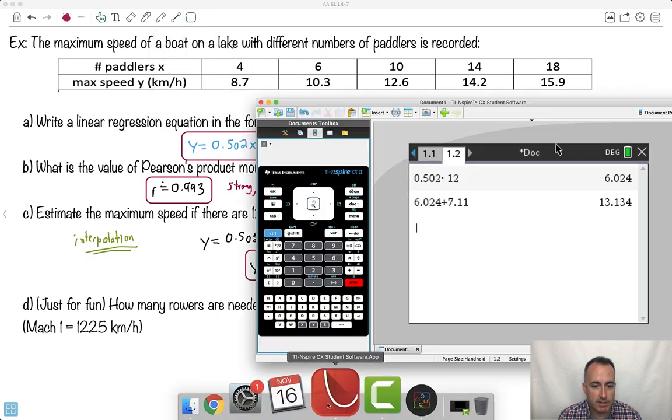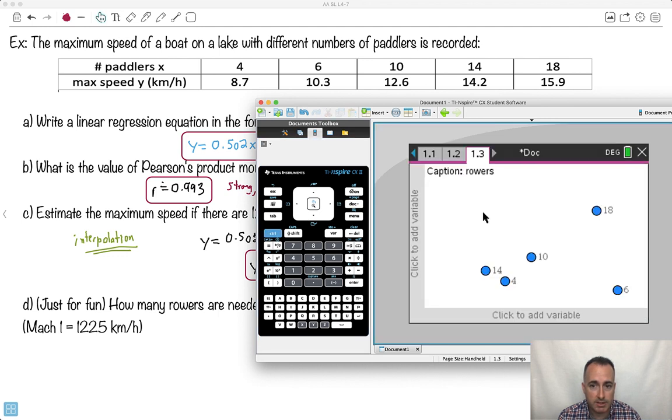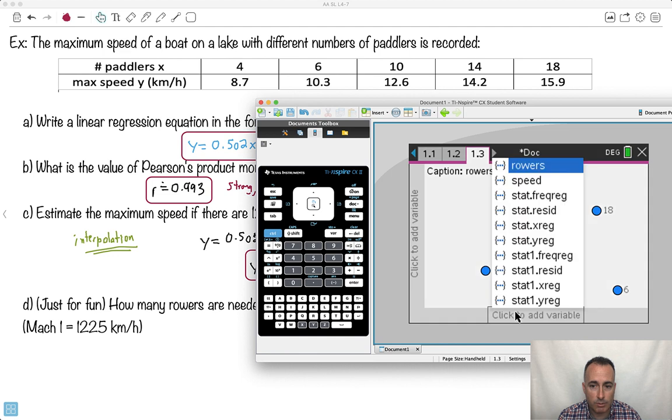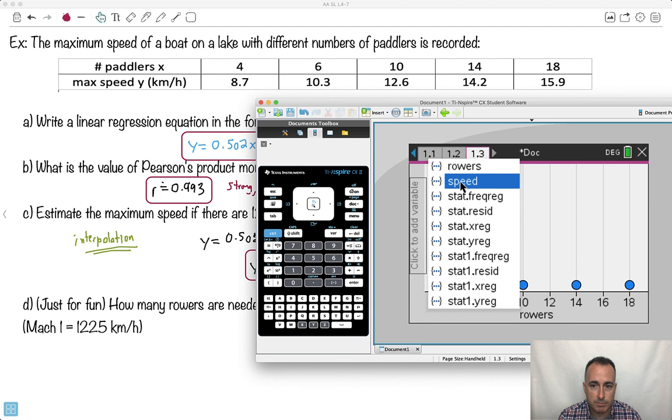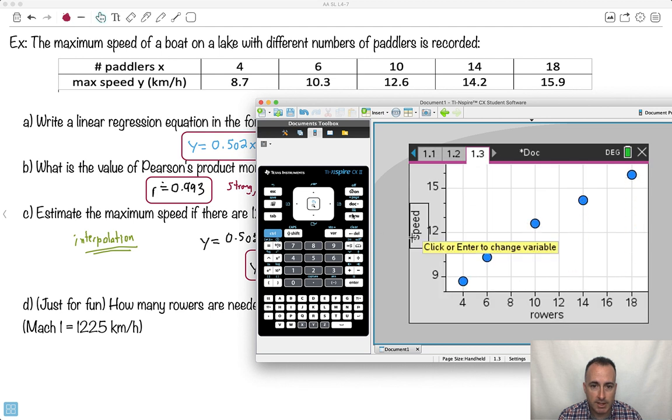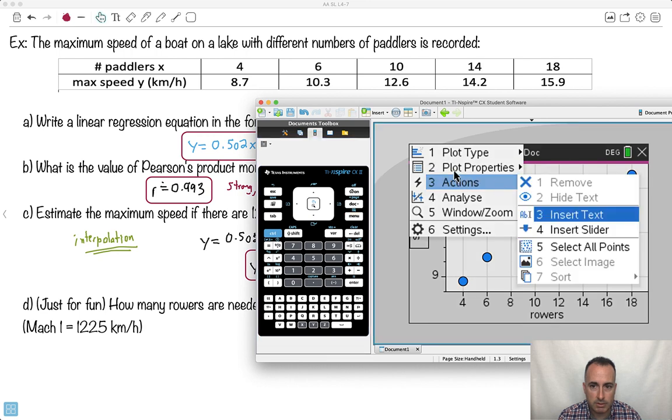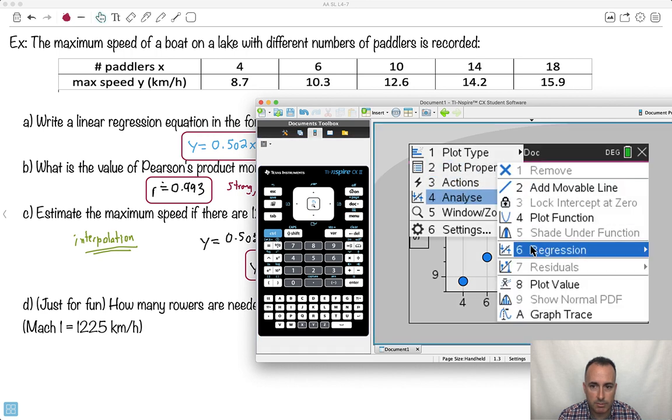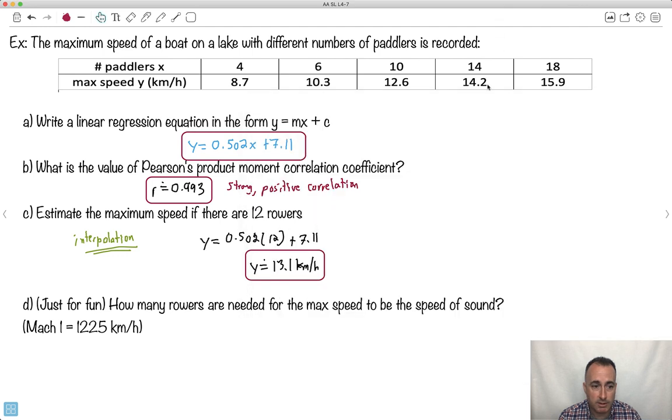By the way, remember I said you can visualize the data? Watch this. I can say give me a new page, give me data and statistics. You just got to tell it what's what. This is on the x-axis rowers, on the y-axis is the speed. You can say, hey, look at that. And I can even say, can you give me the regressions? I'm going to do analyze, give me a regression, linear regression. So it plots it for me. And can you notice that at 12, it looks like it's around 13 point something. So it seems about right.